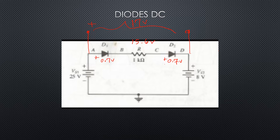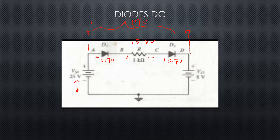That is also plus to minus — 15.6 volts. If we do a Kirchhoff's loop around the entire loop it should equal zero. Starting here and going around: minus 25 plus 0.7 plus 15.6 plus 0.7 plus 8, and that does equal 0 volts. So we know that our math up to this point looks pretty good.